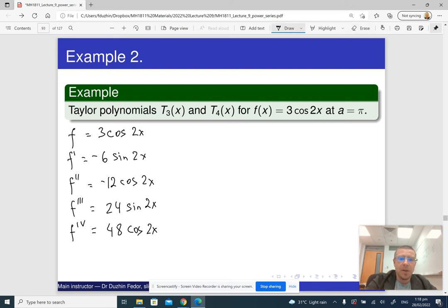All right, so now we are looking at Taylor polynomials at pi. So a equals pi. All right, so what is the value at pi? So cosine of 2 pi. Well, basically, when we substitute pi as x into our consecutive derivatives,